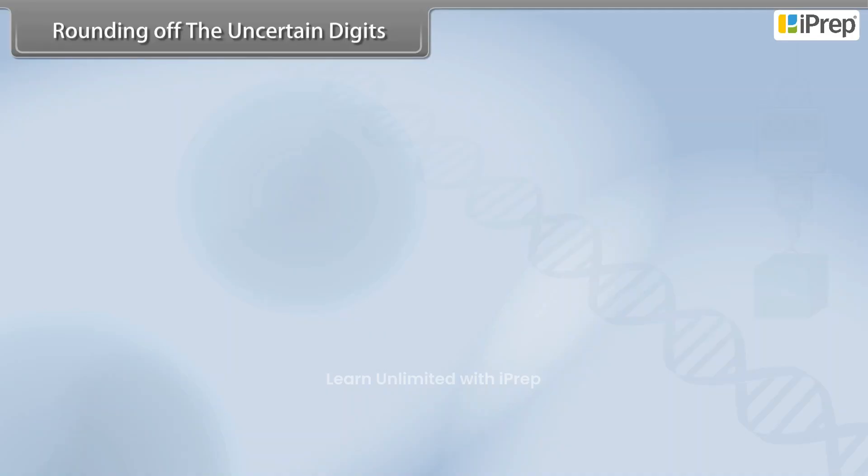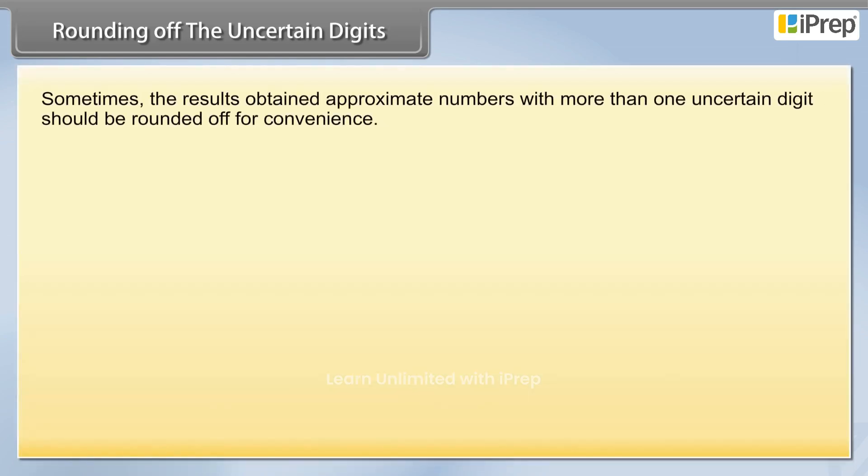Rounding off the uncertain digits. Sometimes the results obtained approximate numbers with more than one uncertain digit should be rounded off for convenience.